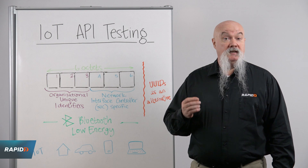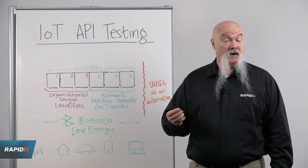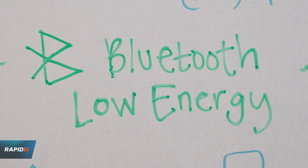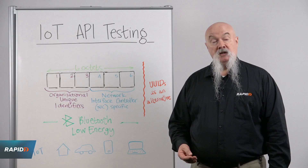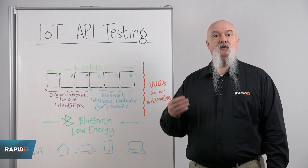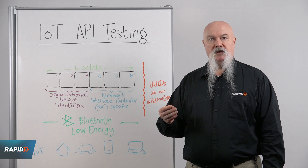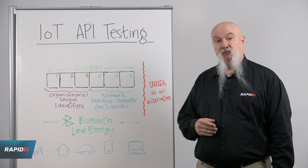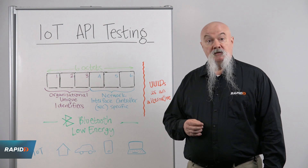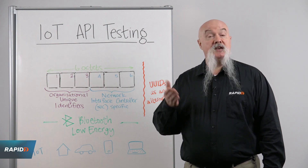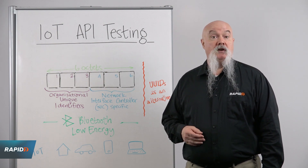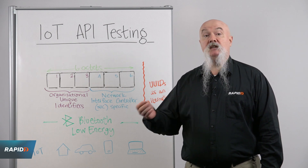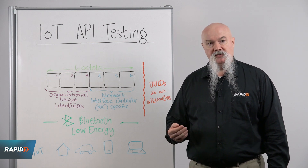A lot of IoT technology utilizes Bluetooth Low Energy quite commonly. And when a tracking ID used to identify and control a device happens to be the MAC address for that Bluetooth Low Energy device, this creates a higher possibility of an attacker being able to identify and potentially gain access to control that device.